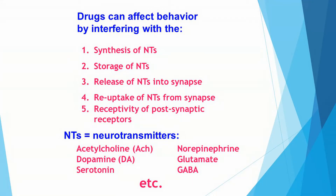Because you know how synaptic transmission takes place, you can now predict the effects of many types of drugs. For instance, what happens when neurotransmitters are increased or decreased at the neuromuscular junction? Basically, drugs can affect behavior by interfering with any part of synaptic transmission.